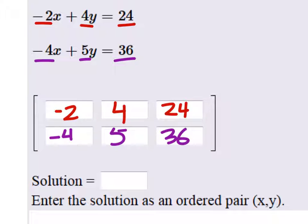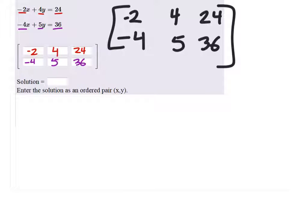There's our matrix. All right, once again, if I look at this, the idea is to get a 1, 0, and a 0, 1 with our answers here.